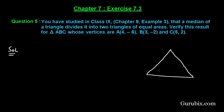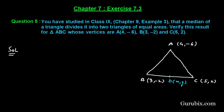Let us first draw a rough sketch of triangle ABC. Here A has coordinates (4, -6), B has coordinates (3, -2), and C has coordinates (5, 2). We know that when we join the midpoint of a side of a triangle to the opposite vertex, that line is called a median. Suppose D is the midpoint of BC, with coordinates (x, y). Then line AD is the median of triangle ABC.